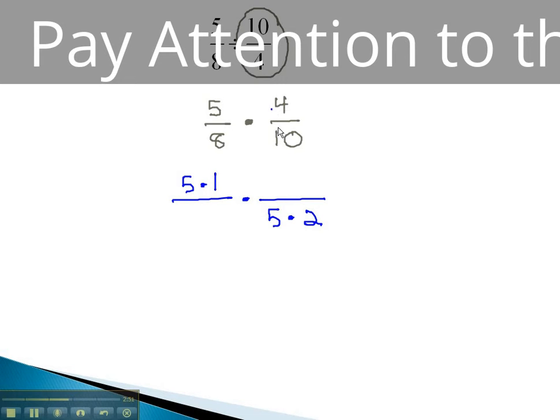Similarly, 8 and 4 have a common factor of 4. This is because 8 is 4 times 1...I'm sorry, 8 is 4 times 2, and 4 is 4 times 1.